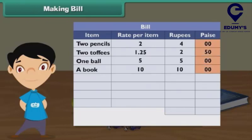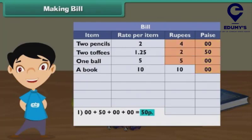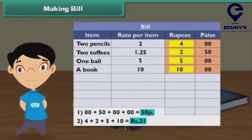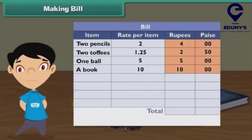Add the numbers in the paise column: 00 plus 50 plus 00 plus 00 is equal to 50 paise. Add the numbers in the rupees column: 4 plus 2 plus 5 plus 10 is equal to 21 rupees. Make a new row and write 'Total' under the Rate Per Item column. Write 21 rupees in the rupees column and 50 paise in the paise column. The bill is ready — Ramita has to pay rupees 21 and 50 paise to the shopkeeper for her purchases.